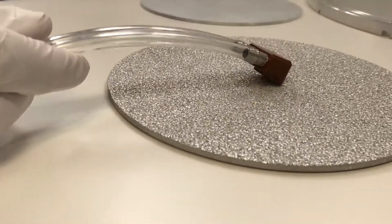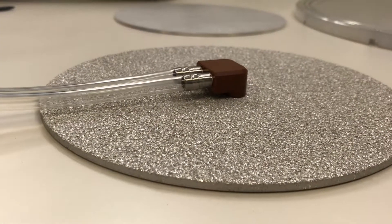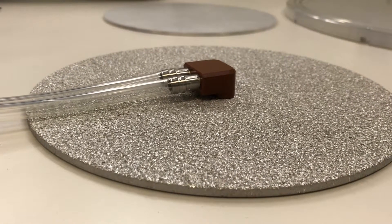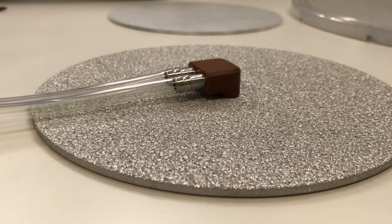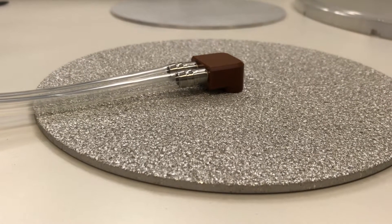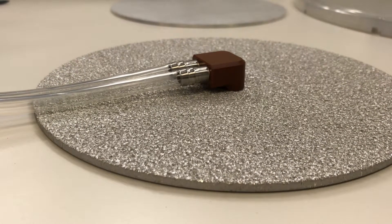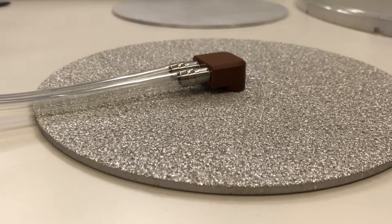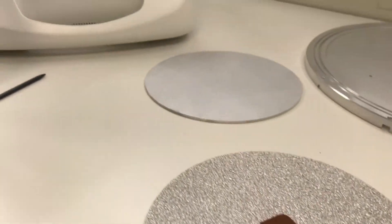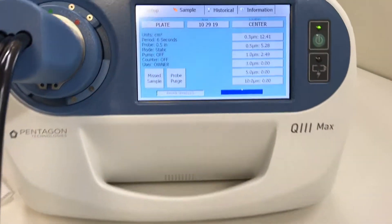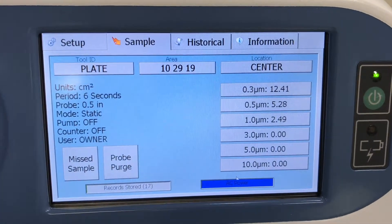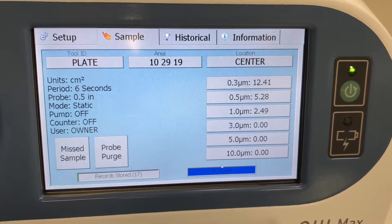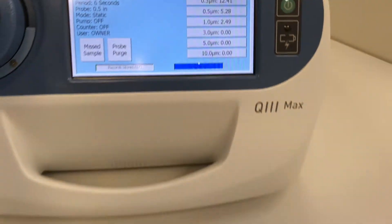After the blow off, we are placing the probe flat on the surface and making a second measurement. You'll notice from the results that the surface contamination has significantly reduced, down to 12.41 greater than 0.3 micron particles per centimeter squared in six seconds.